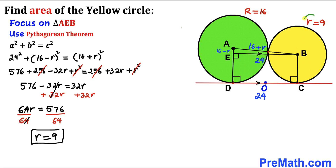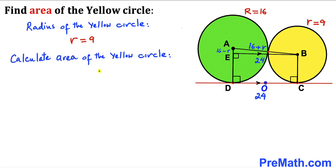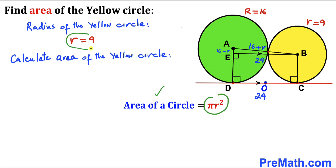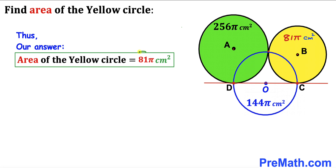The radius of the yellow circle is 9 cm. Now let's calculate the area of the yellow circle using Area = πr²: Area = π × 9² = 81π cm². So the area of the yellow circle is 81π cm². Thanks for watching and please don't forget to subscribe to my channel for more exciting videos.